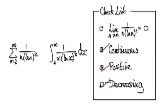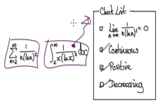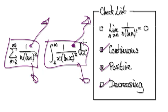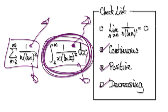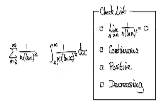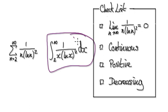Now that these three conditions have been satisfied, we can apply the theorem: if the integral diverges, the series will diverge; if the integral converges, the series will converge. So the next question is: will this integral from 2 to infinity diverge or will it converge? We need to evaluate this as it heads towards infinity.